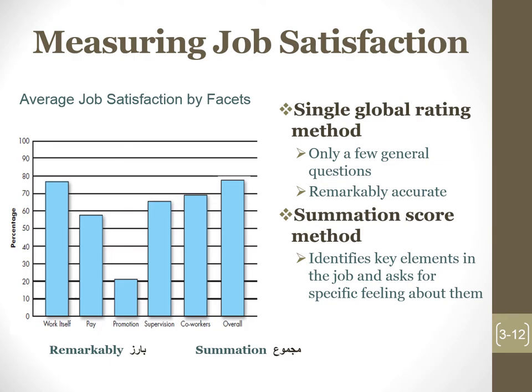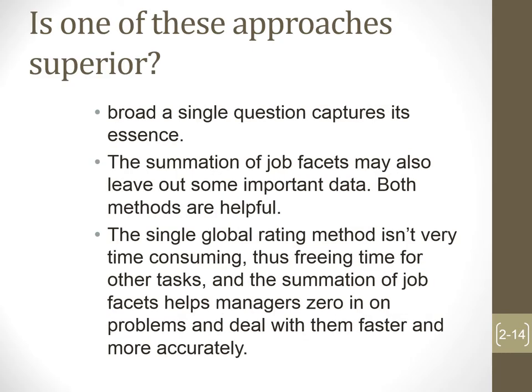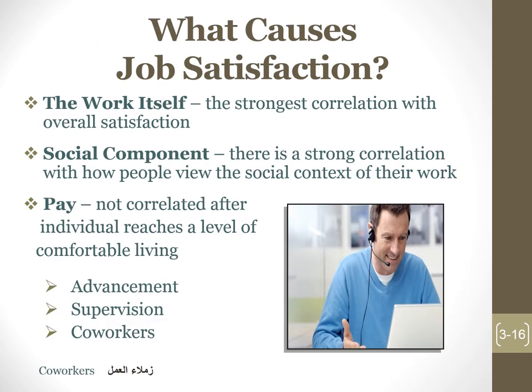What causes job satisfaction? There are three key elements. First, the work itself — the strongest correlation with overall satisfaction. Second, the social component — community in the workplace; there is a strong correlation with how people view the social context of their work. Third, pay — salary and other benefits — though pay does not significantly increase satisfaction after individuals reach a comfortable level of living.